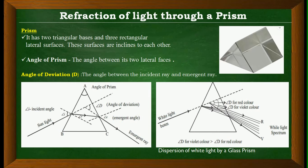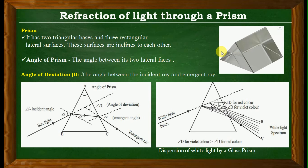The next concept is refraction of light through a prism. A prism has two triangular bases and three rectangular lateral surfaces. These surfaces are inclined to each other. The angle of prism is the angle between two lateral surfaces.